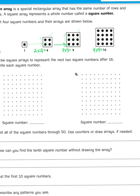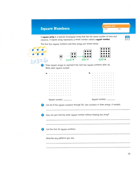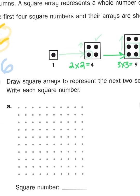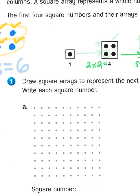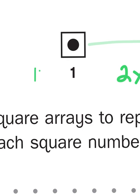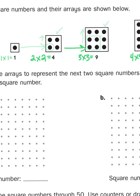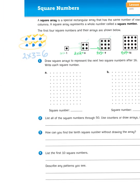So when we take a look at these problems, number 1A asks us to draw square arrays to represent the next two square numbers after 16. If you look at the pattern: this first array was 1 group with 1 in each group — 1 times 1 is 1. Then 2 times 2 is 4. Then 3 times 3 is 9. Then 4 times 4 is 16.